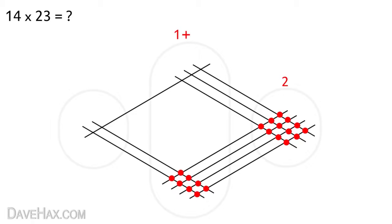So we have 1 2 3 4 5 6 7 8 9 10 11 dots or line crosses in this zone. We add that to the one we carried over from the last zone and that gives us 12. So now we have to do exactly the same again.